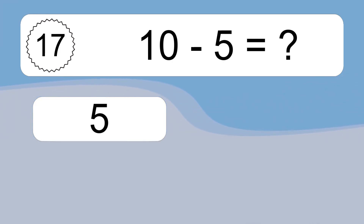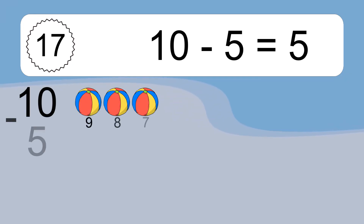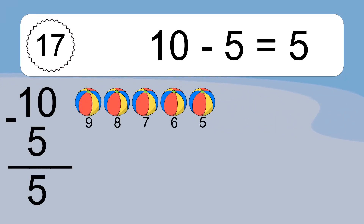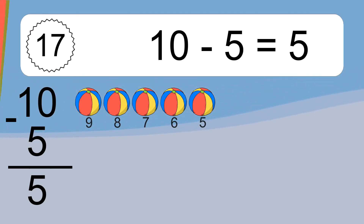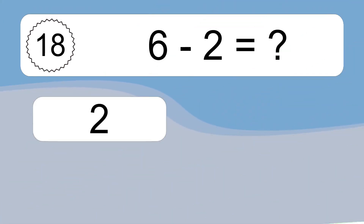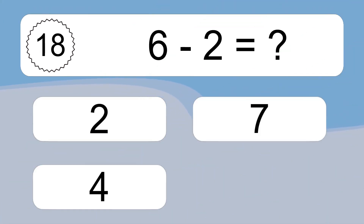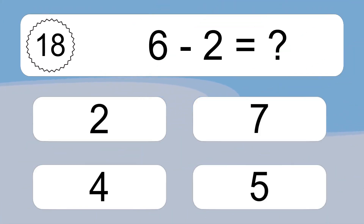Ten minus five equals what? Ten minus five equals five. Let's count it: nine, eight, seven, six, five.